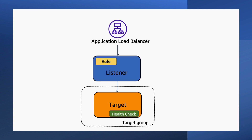Then we'll add the private Amazon EC2 instance as a target. A load balancer serves as the single point of contact for clients. The client sends requests to the load balancer, and the load balancer sends the traffic to the targets, which are the EC2 instances. To configure the load balancer, we create target groups and then register targets with your target groups.